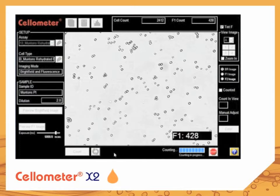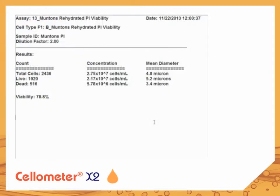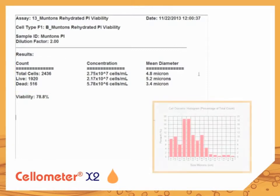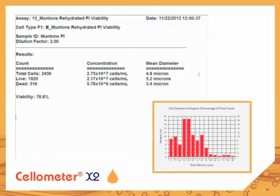After cell images are acquired, results are displayed on the screen. Results include the total count, cell size histogram, percent viability, and concentration.